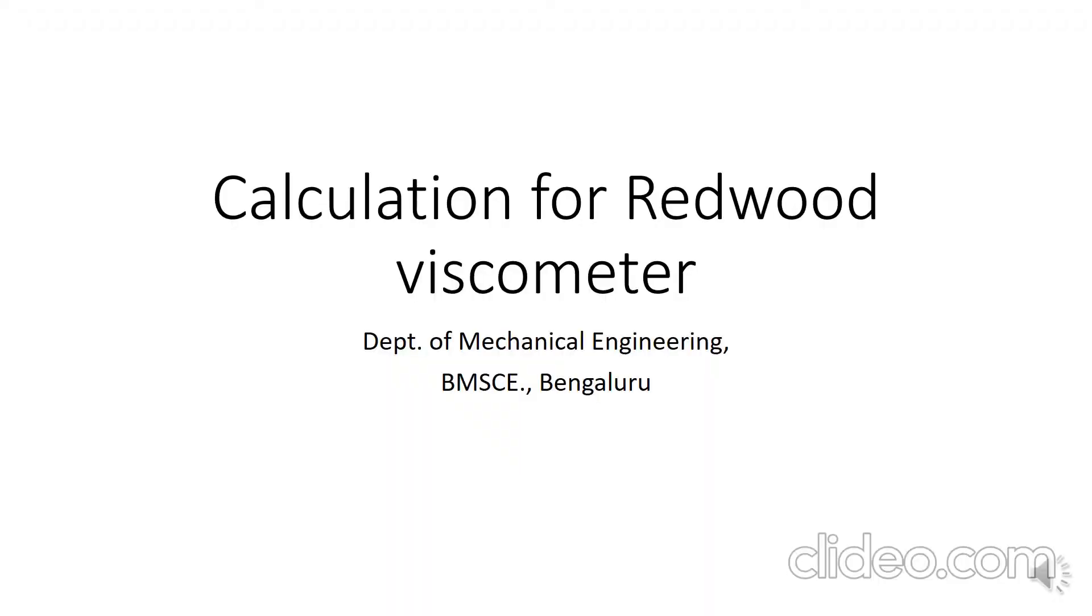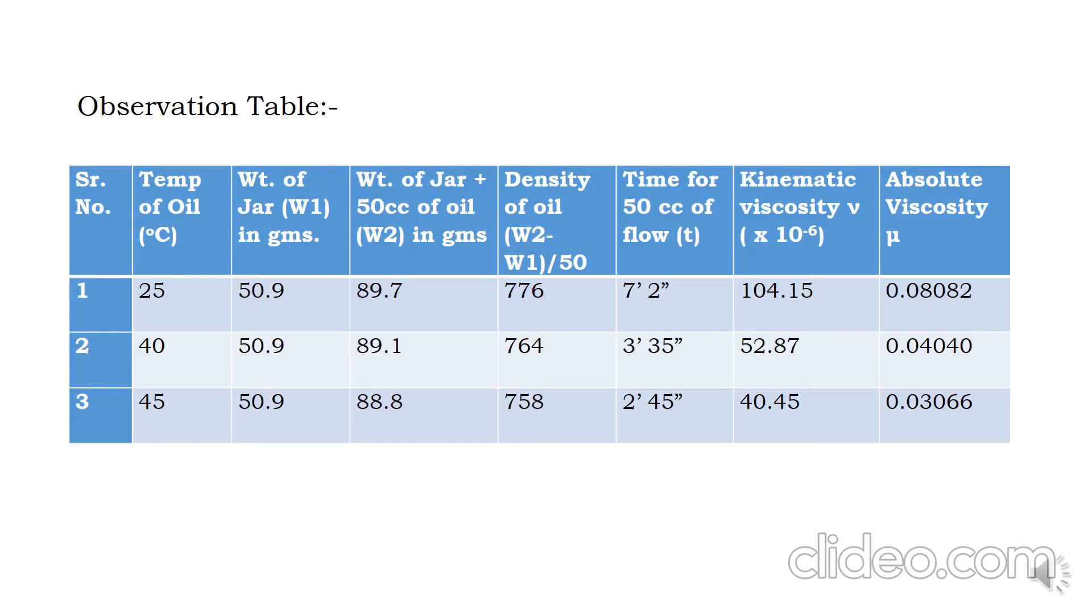The observation table consists of temperature of the oil, weight of the jar empty, weight of the jar with 50 cc of oil (W2), density of the oil (W2 minus W1 divided by 50 cc), time required on stopwatch for 50 cc of oil collected in the beaker, then kinematic viscosity and absolute viscosity. The temperatures are room temperature at around 25, then higher temperatures at about 40 and 45.